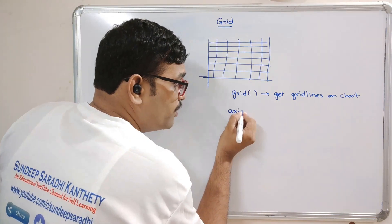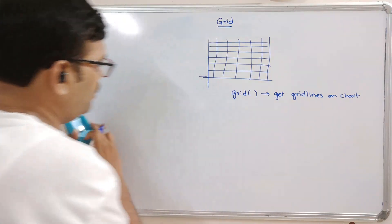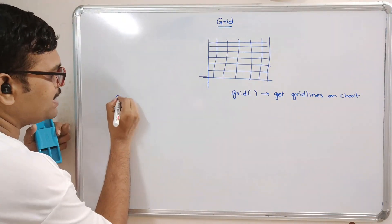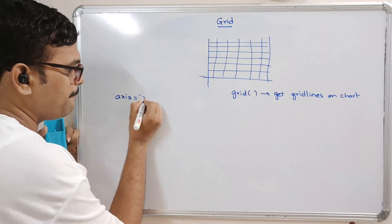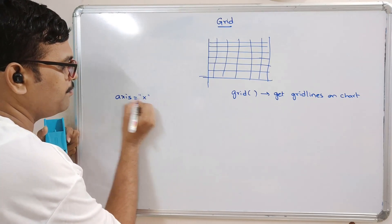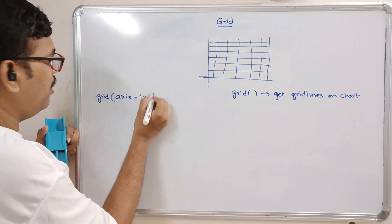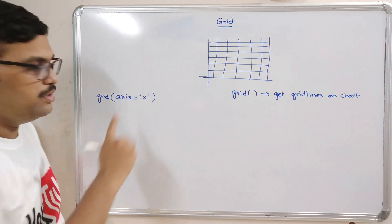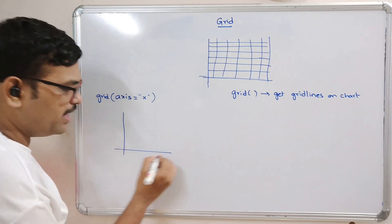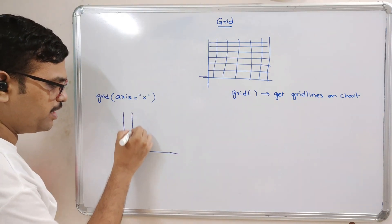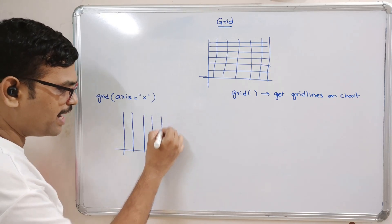Here we have one argument called axis. With respect to axis we can apply the grid. For example, grid with axis equal to x — that implies only the x-axis lines will be there. There will be no lines applied on the y-axis, so the graph appears like this.